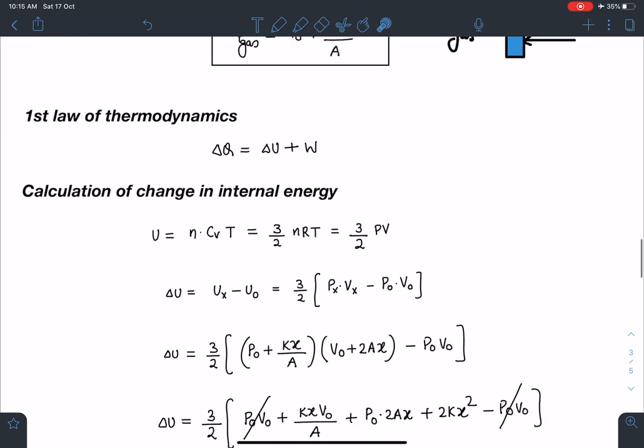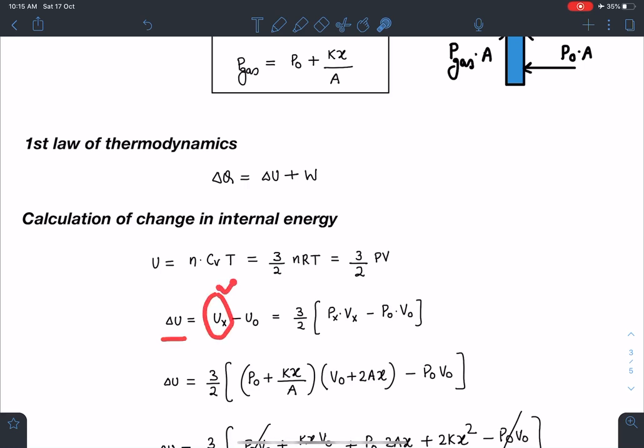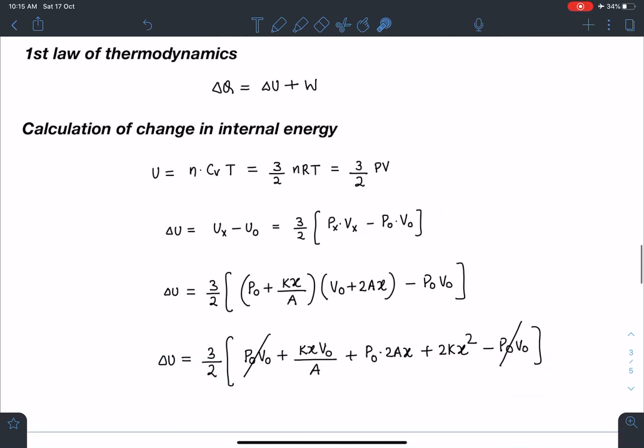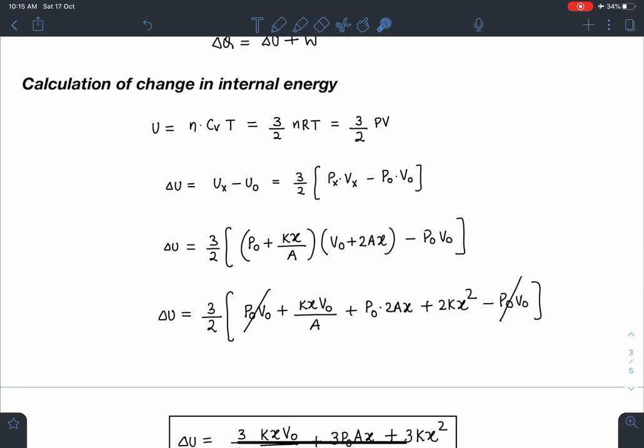So from here I can write this delta U, I can write internal energy at x minus internal energy initially. So internal energy 3 by 2 I can take common, and Ux will be 3 by 2 Px Vx minus P0 V0. Here as you can see, so I know the Px value, I know the Vx value.